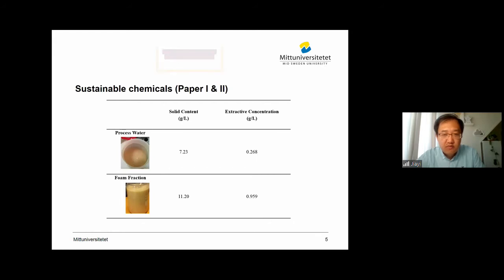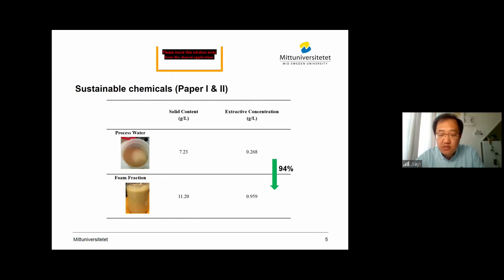Here we compare the solid content and extractive concentrations in the process water and in the collected foam fraction. As we can see from the numbers, the substances are enriched from the process water into the foam fraction. And also, if we consider the mass balance in the extractive concentration, we can conclude that about 94% of the extractives are removed from the process water into the foam fraction.